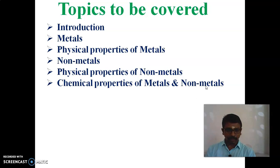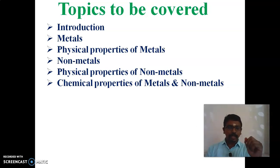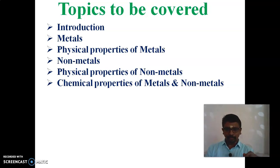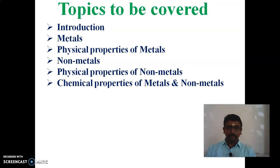So what is the difference between physical properties and chemical properties, children? Physical properties means their appearance, melting point, boiling point, and density. So these are all physical properties. With the help of appearance, we have to determine the properties.